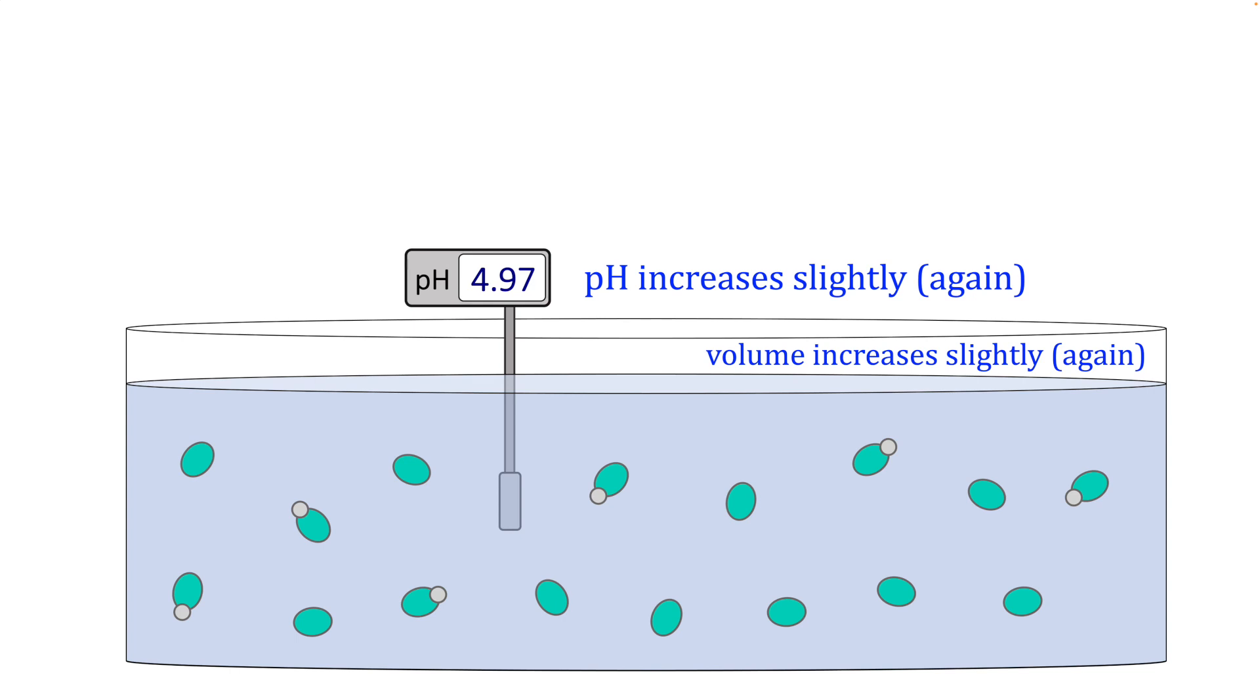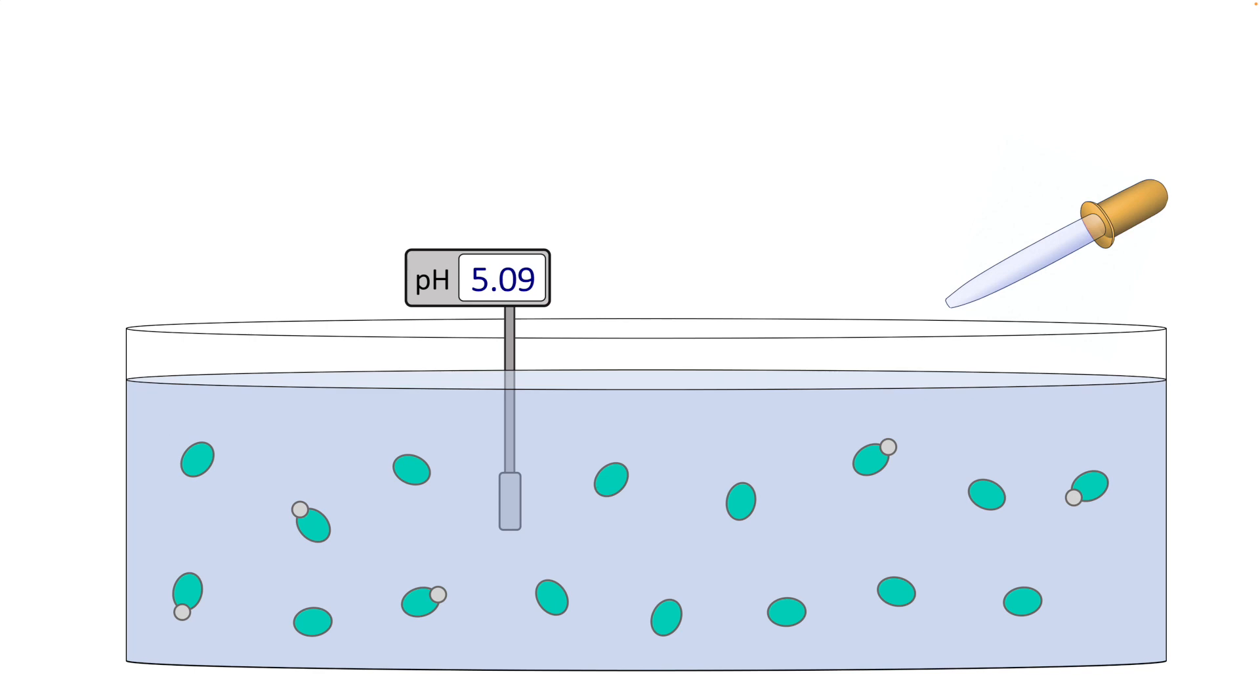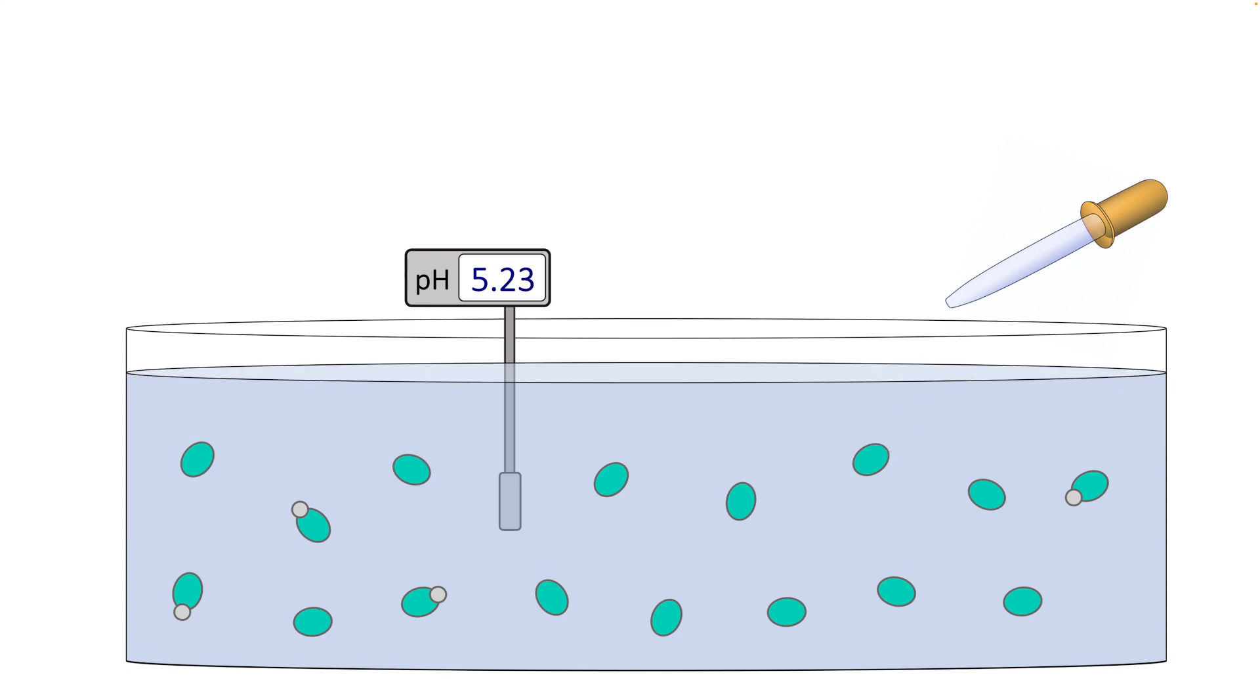Now note, we still have reasonable amounts of acetic acid and its conjugate base, acetate. So we still have a buffer. And then, if we keep adding strong base to this buffer, acetic acid molecules get converted into acetate ion molecules by the strong reaction with strong base. The pH continues to gradually increase.